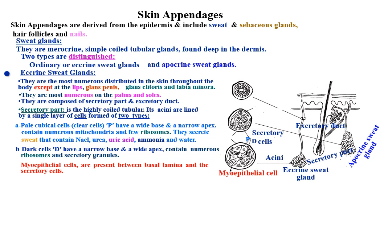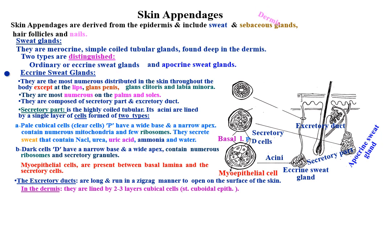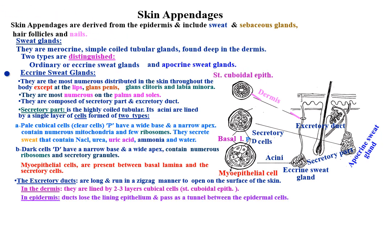The secretory ducts are long and run in a zigzag manner to open on the surface of the skin. In the dermis, the ducts are lined by two to three layers of cuboidal cells — stratified cuboidal epithelium. While in the epidermis, the ducts lose the lining epithelium and pass as a tunnel between the epidermal cells.